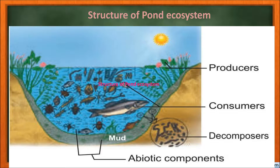The pond provides complex interaction between the biotic and abiotic components. The abiotic components include dissolved inorganic substances like carbon dioxide, oxygen, calcium, nitrogen, phosphate, etc., and organic substances like amino acid and humic acid. The functions of the ecosystem are regulated by factors like light, temperature, pH value of water, and other climatic conditions.